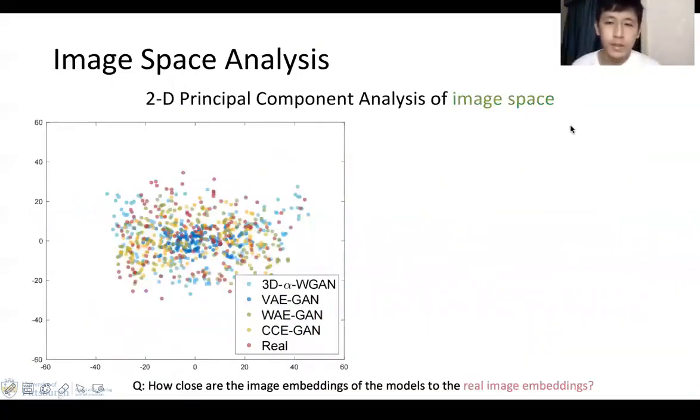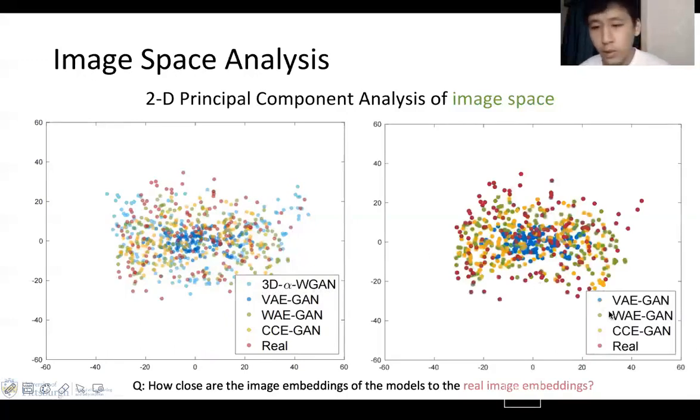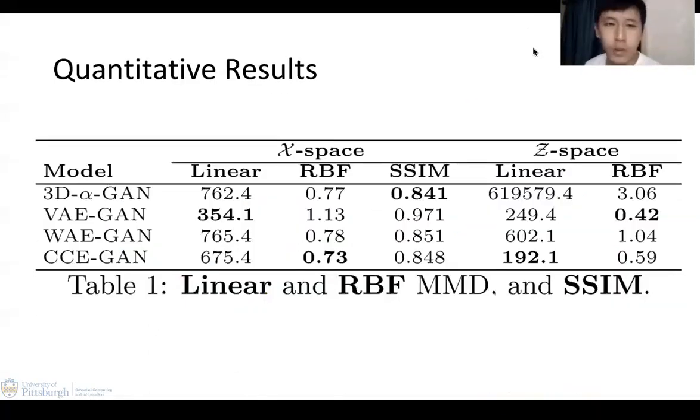Now let's take a look at the PCA analysis of the image space. We can see the light blue dots, which are the outputs from the 3D alpha-WGAN, are spread out similarly to the real image distribution, which means they have smaller soft mode collapse. If we take a look at the distribution of our models, CCE-GAN and WAE-GAN, they're also pretty similar to the real image distribution. However, VAE-GAN's distribution is clustered in the center. This is because the blurriness of VAE-GAN's output is so serious that it essentially makes the images very similar to each other and essentially results in a mode collapse, which is unexpected from VAE-GAN.